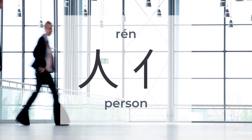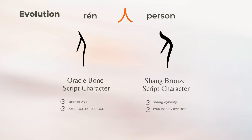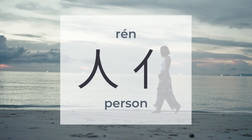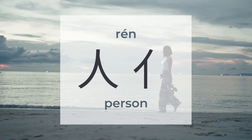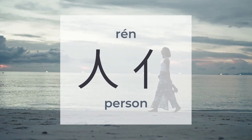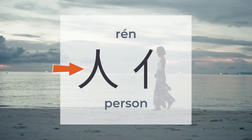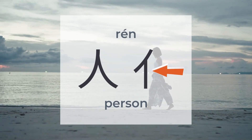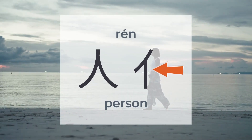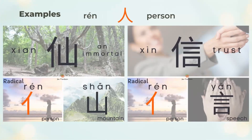人 means person. There are around 794 characters to be found under 人. 人 is a pictogram with two forms. The walking 人 transforms into the standing form when appearing on the left side of a Chinese character. 仙 means immortal. 仙 is the left 人 (person) and the right 山 (mountain).